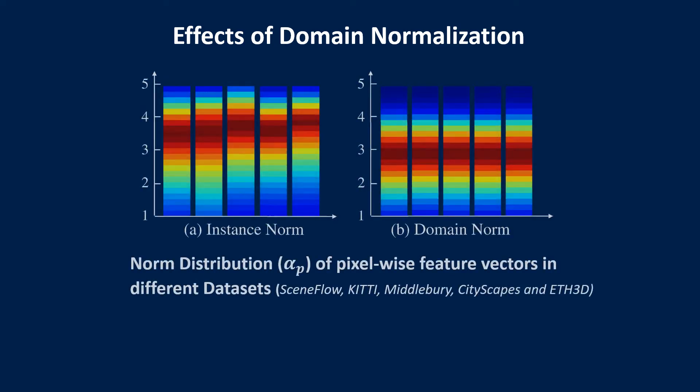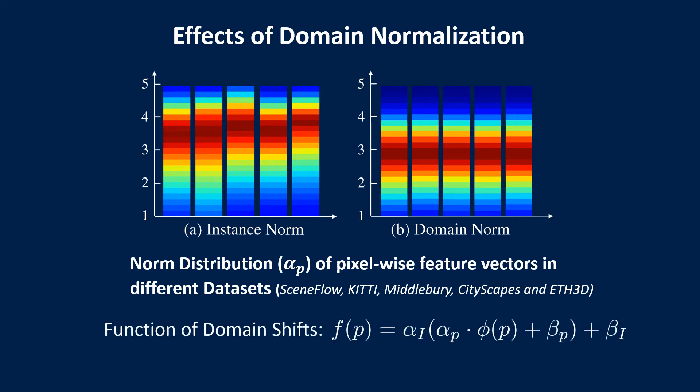This figure shows the distribution of feature vectors across different datasets. We use the L2 norm to visualize the distribution influenced by local contrast, namely alpha_p in the domain shift function. We find that instance normalization cannot handle these local or pixel-wise variations, while our domain normalization can align feature vectors very well across different datasets.